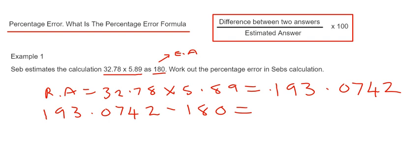Always put the bigger number first when you work out your difference, and this will give 13.0742. That's the top bit of our formula, so we can now put all our numbers into the formula.